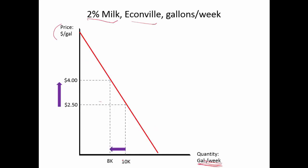As the price goes up, people buy less. Notice our terminology here. When price rose, what changed? Quantity — the quantity that people purchased declined from 10 to 8,000. We don't say demand changed. Demand is this demand curve — let's label it demand one. That didn't change. We just moved along that demand curve from point A to point B.